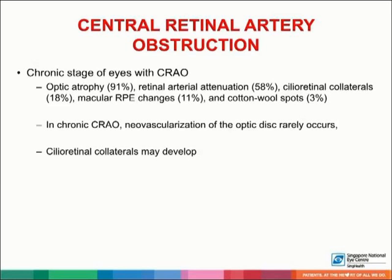In the chronic stage of eyes with CRAO, optic atrophy, retinal arterial attenuation, cilioretinal collaterals, macular RPE changes, and cotton wool spots are seen. Neovascularization of the optic disc rarely occurs, presumably because non-viable tissue is less likely to elaborate angiogenic factors. Cilioretinal collaterals may develop as a result of compensatory enlargement of capillary anastomoses between retinal capillaries on the surface of the disc and ciliary capillaries in deeper parts of the optic nerve head.